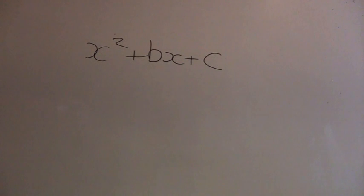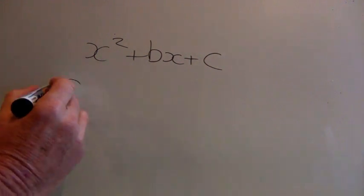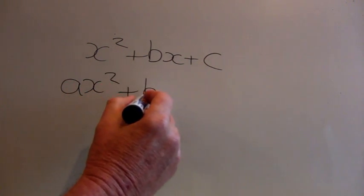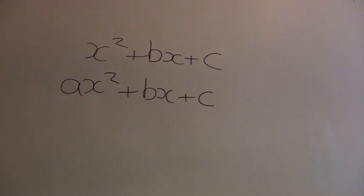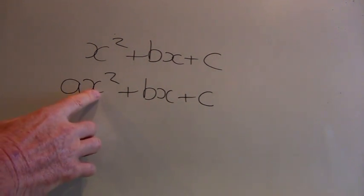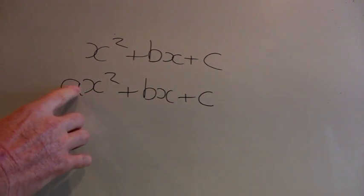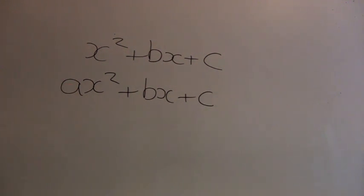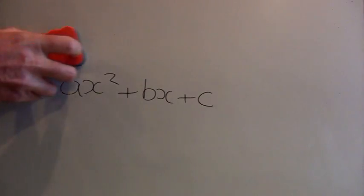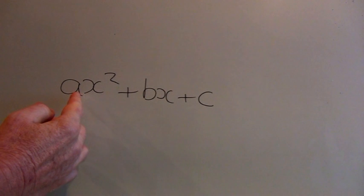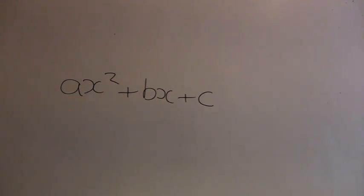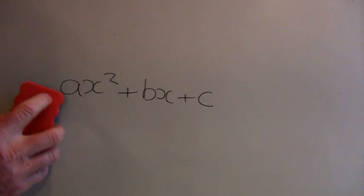Now if we rewrite the quadratic in the form ax squared plus bx plus c, this means that the coefficient of x squared, namely a, is equal to 1. So we're now going to multiply out brackets to give quadratic equations where the coefficient of x squared is not equal to 1, in the form ax squared plus bx plus c. So let's have a look at a few examples.